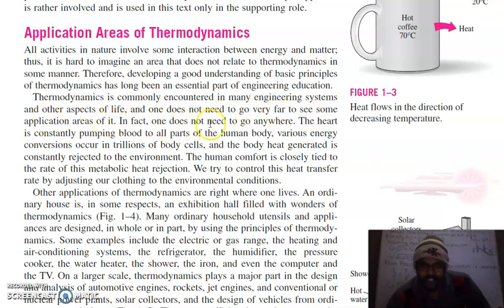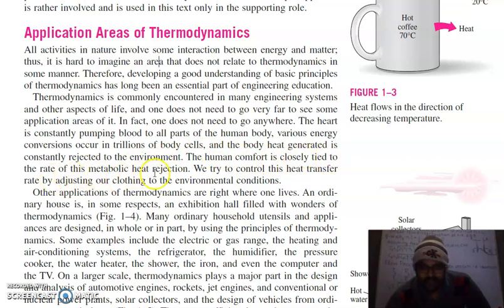In fact, one does not need to go anywhere. The heart is constantly pumping blood to all parts of the human body. Various energy conversions are occurring in trillions of body cells, and body heat is generated constantly, which is rejected to the environment. Human comfort depends on the rate of this metabolic heat rejection, and we try to control this heat transfer rate by adjusting our clothing to environmental conditions.